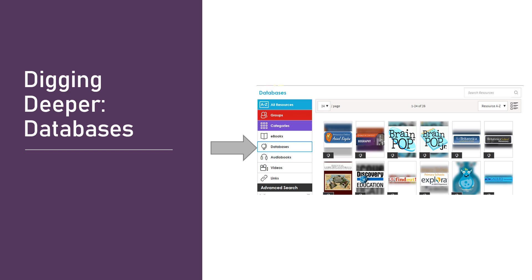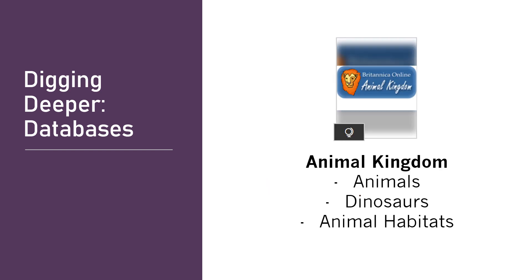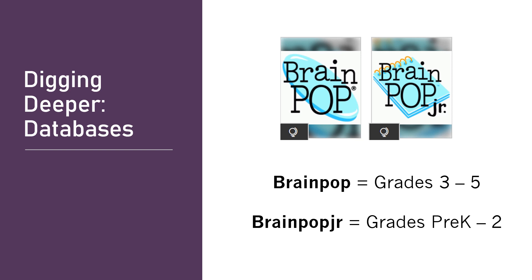Now we're going to dig into databases. On the left-hand side, click on databases where the globe icon is — that will populate all of our databases. Animal Kingdom is an excellent resource, really for grades 2 through 5. It has information about all sorts of animals, even dinosaurs and extinct animals, animal habitats, and lots of students use this during their nonfiction writing units.